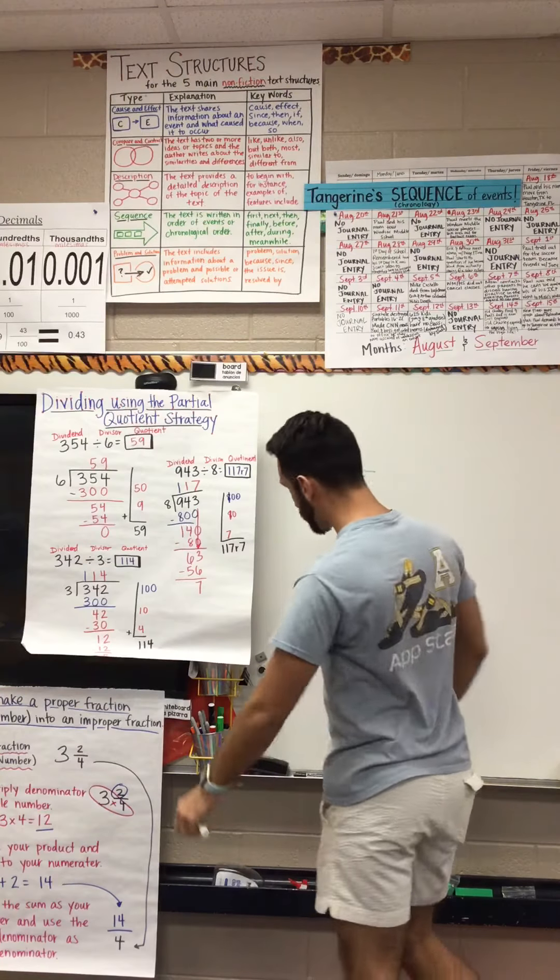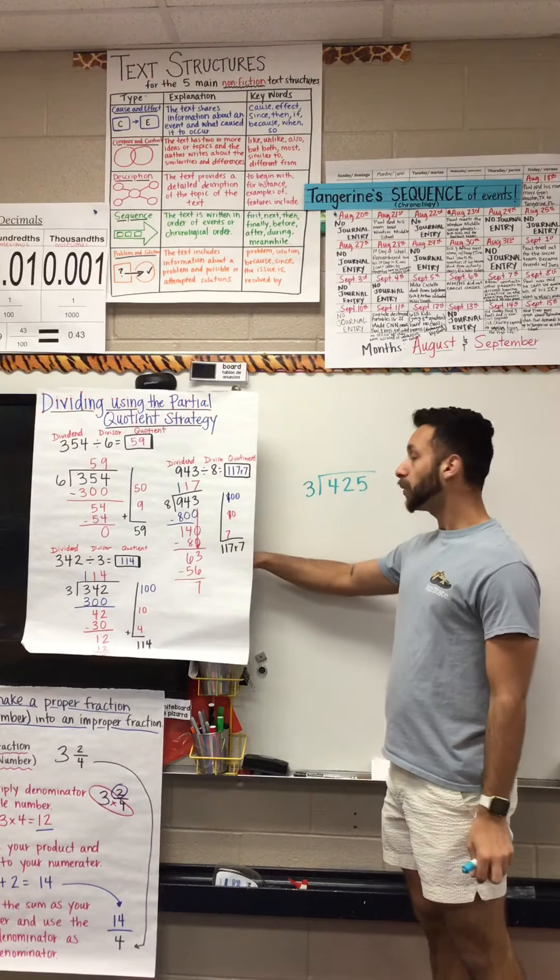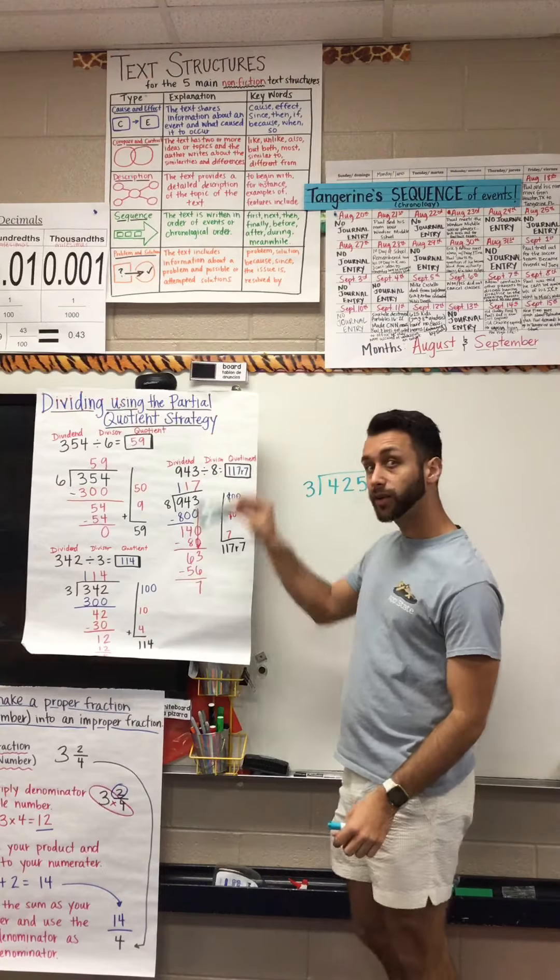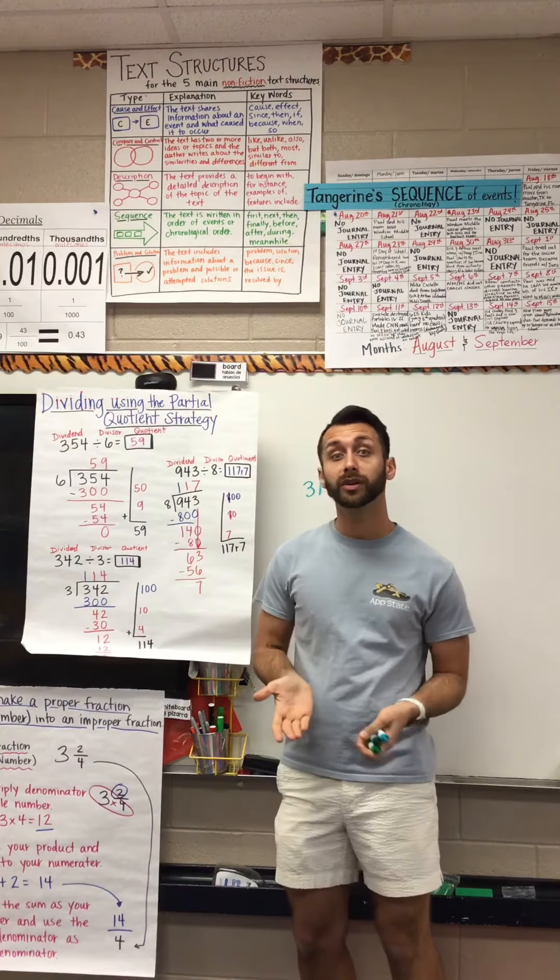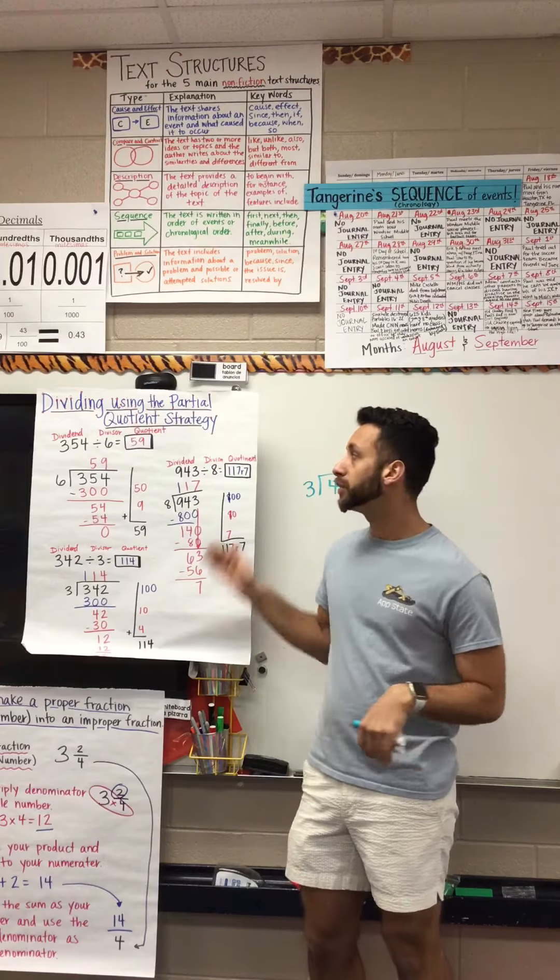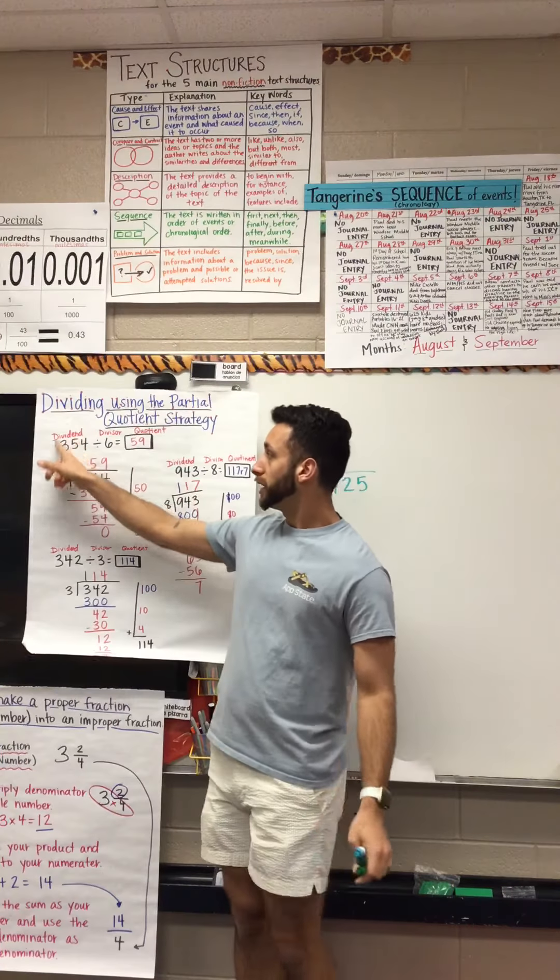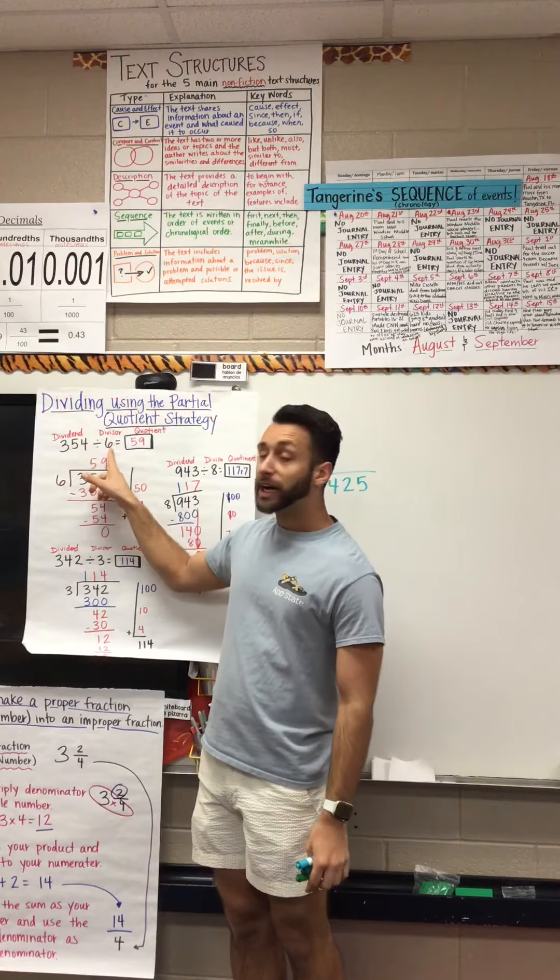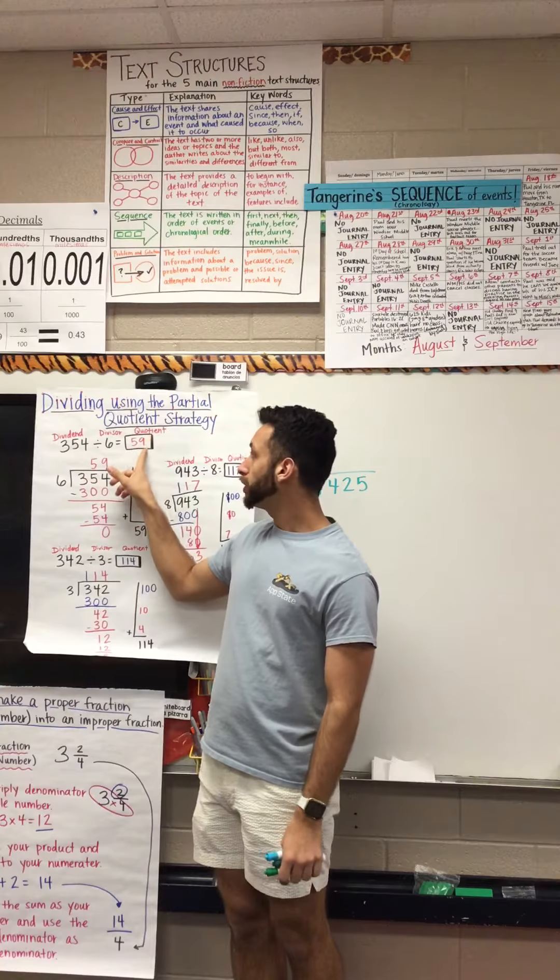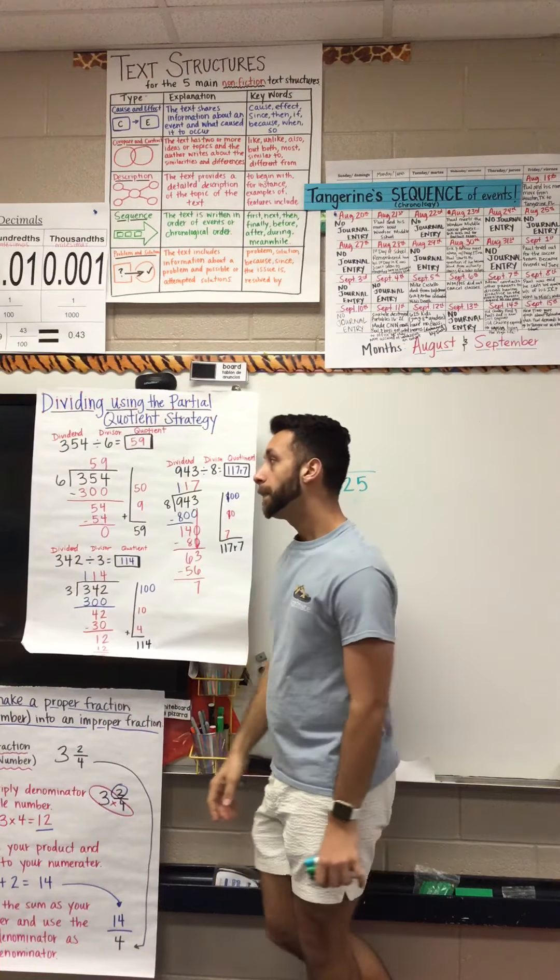With that being said, I'm just going to quickly go over this anchor chart, which I'll also post a picture of closer so you can see how it's done. Remember, your dividend is your bigger number, your divisor is your small number, your quotient is your answer.